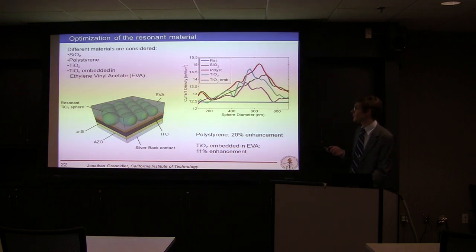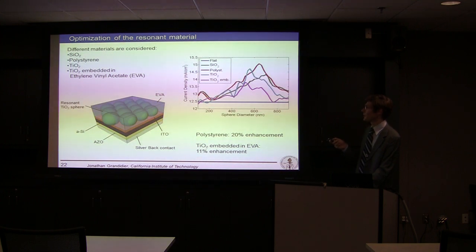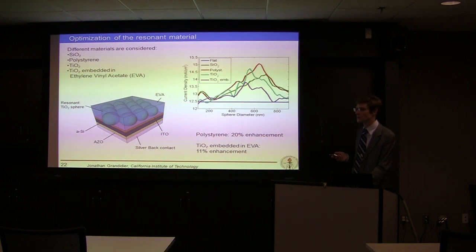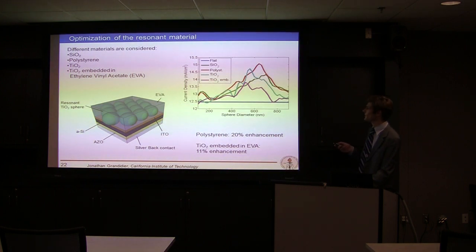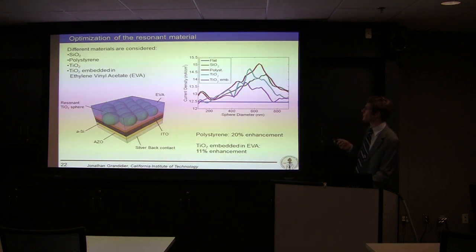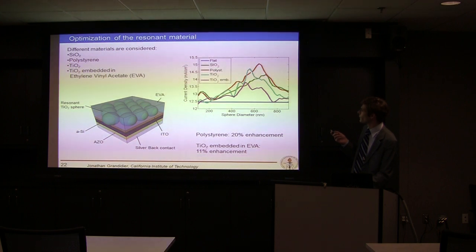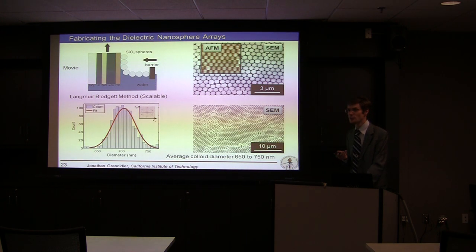I did a lot of simulations considering different types of material — for example, polystyrene and TiO2. TiO2 was especially interesting because since it has a high refractive index, we can consider embedding it in another dielectric such as EVA, which is commonly used in the photovoltaic industry. For all these cases, here is the current density compared to a flat solar cell. We have about 20% enhancement for a 600-nanometer polystyrene sphere and about 15% for a 700-nanometer SiO2 sphere.